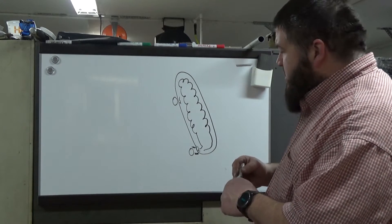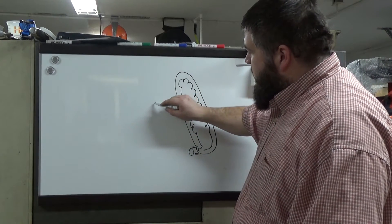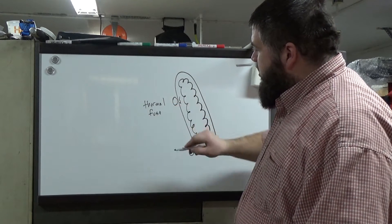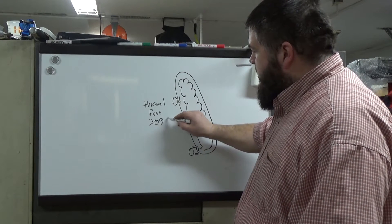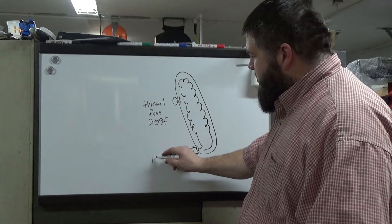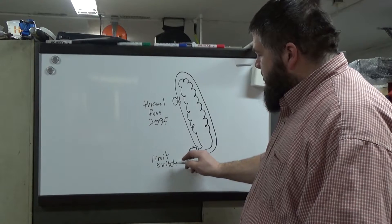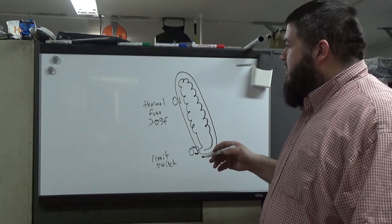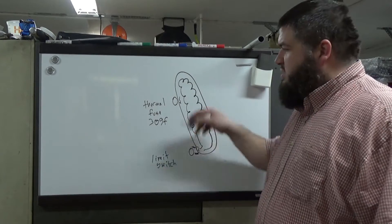The way these switches work or what they're called is this one is called a thermal fuse. The part number for this you'll find on the internet is 309F. And then what they call this down here is a limit switch. There doesn't seem to be a real commonality with the limit switch, but this is a Whirlpool dryer. And these parts, you can find a kit online for five bucks to replace both of these switches.